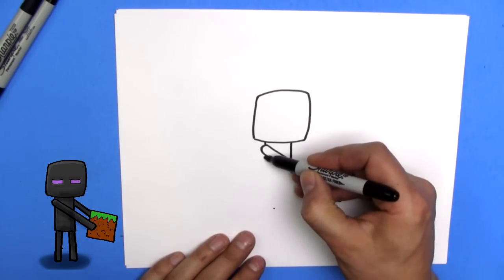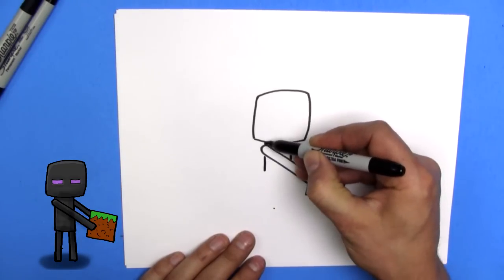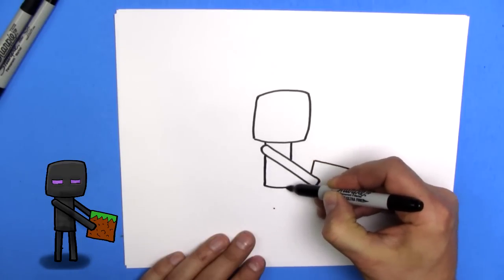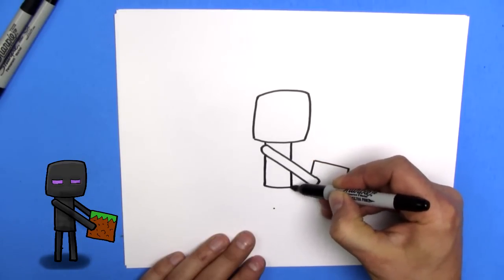So let's just go for reference. We'll draw the, continue the body down past his arm. Like that. Cool.